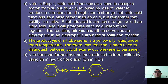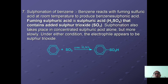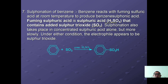Nitrobenzene can also be reduced to aniline using hydrochloric acid and tin under heat. Last but not least, we have sulfonation of benzene, where benzene reacts with fuming sulfuric acid at room temperature to produce benzenesulfonic acid. Fuming sulfuric acid is a mixture of H2SO4 and SO3. Sulfonation also takes place in concentrated sulfuric acid but more slowly. Under either condition, the electrophile is SO3.